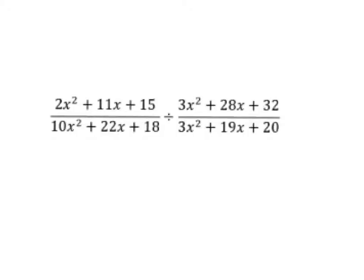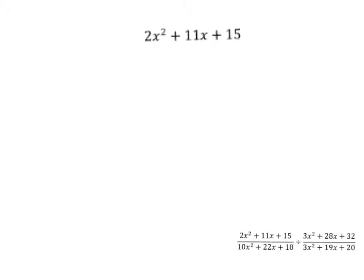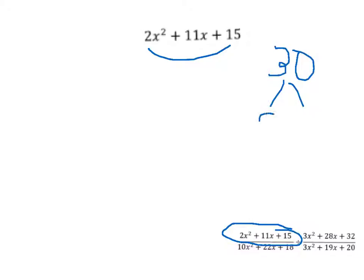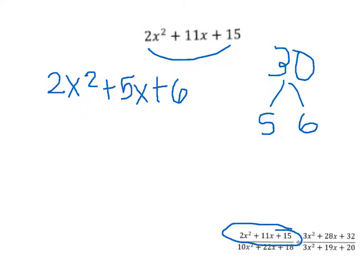First we want to factor the numerator of the first fraction. You multiply 2 and 15 to get 30. The factor pair of 30 that works is 5 and 6. So you plug that back into the equation to get 2x² + 5x + 6x + 15.